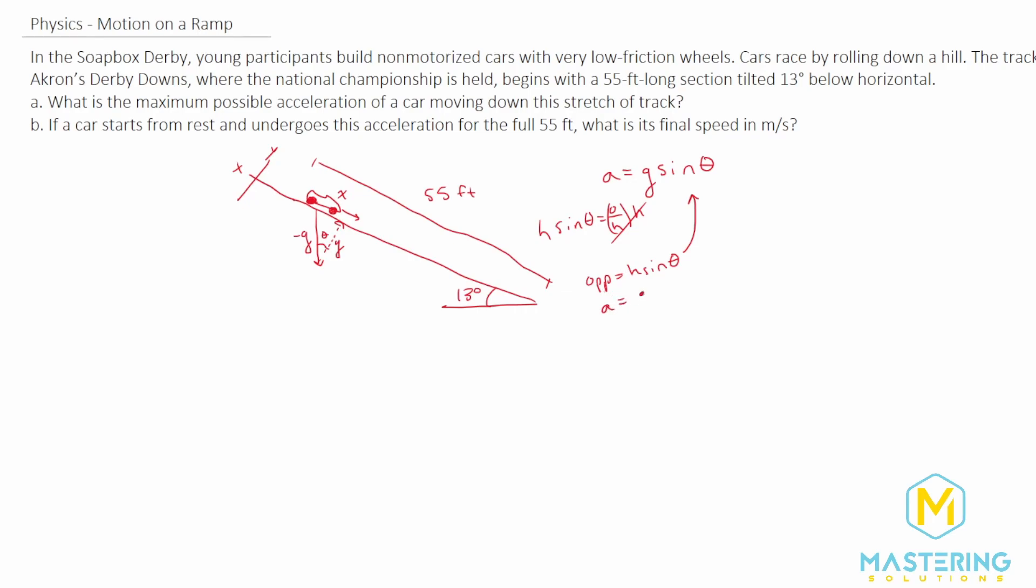Acceleration is equal to g, and it's positive or negative, depending on which direction it's going. In this case we're going in the positive X direction, so we'll use a positive g times the sine of the angle theta. So that's where this equation is coming from.